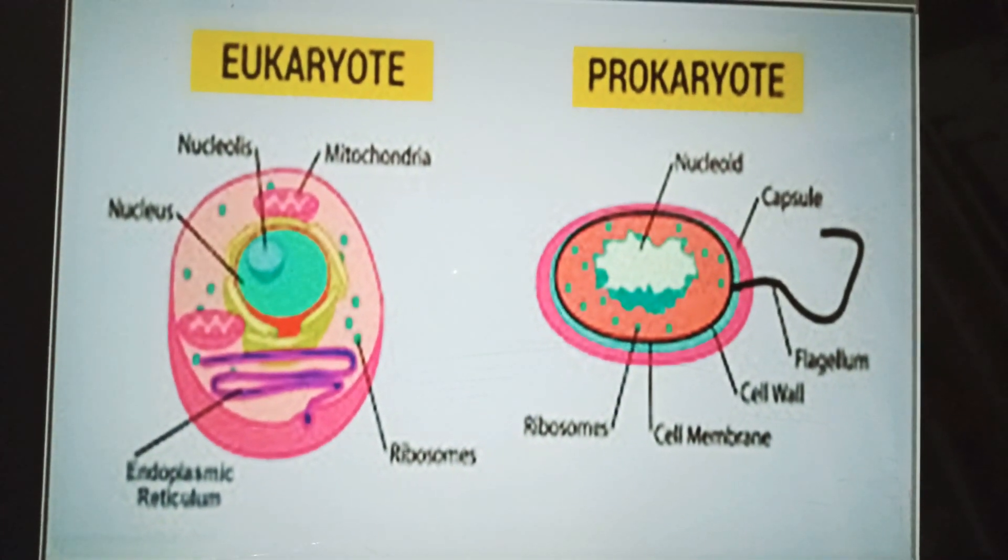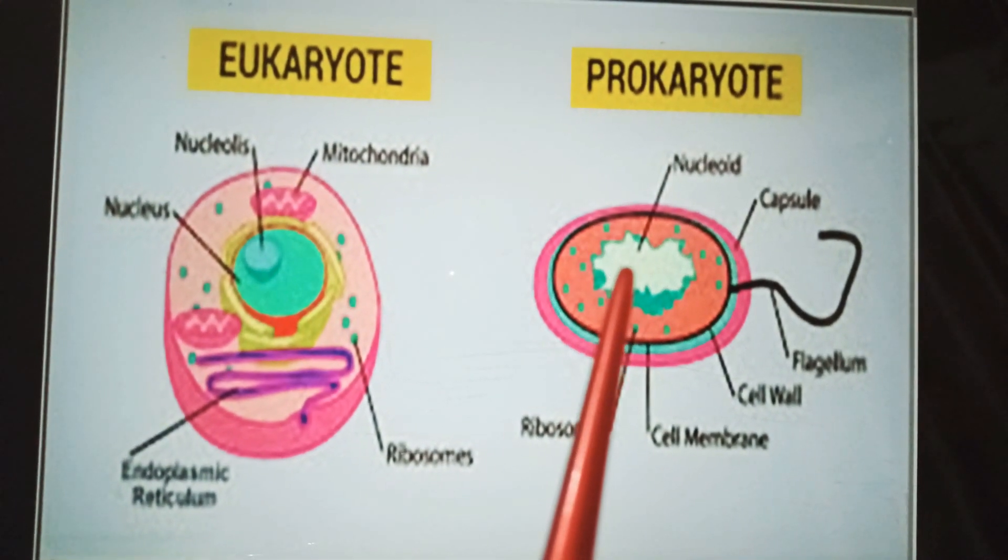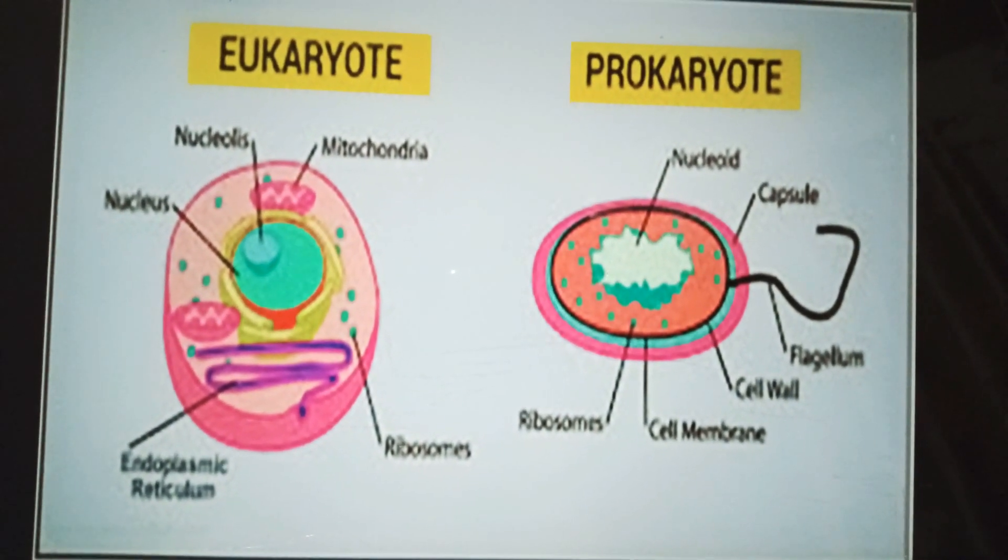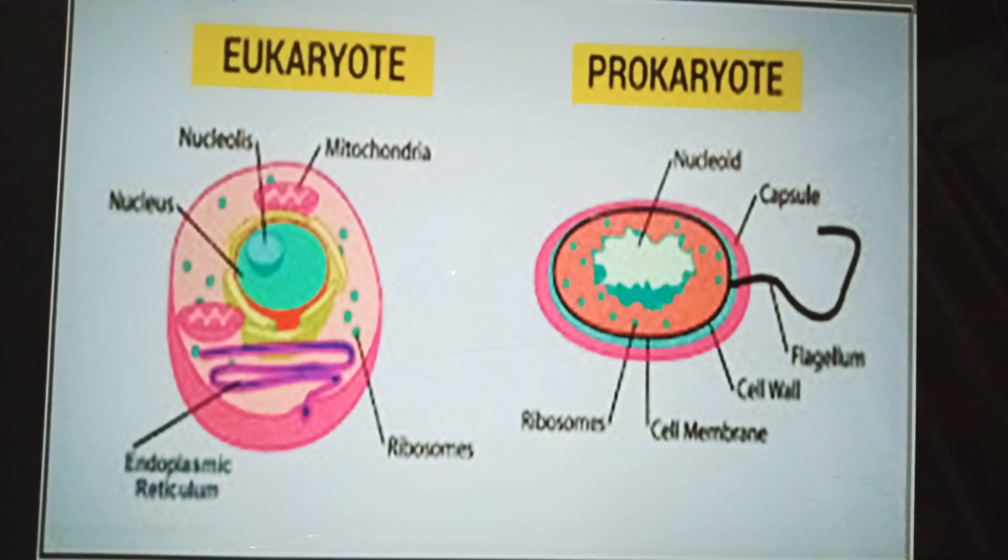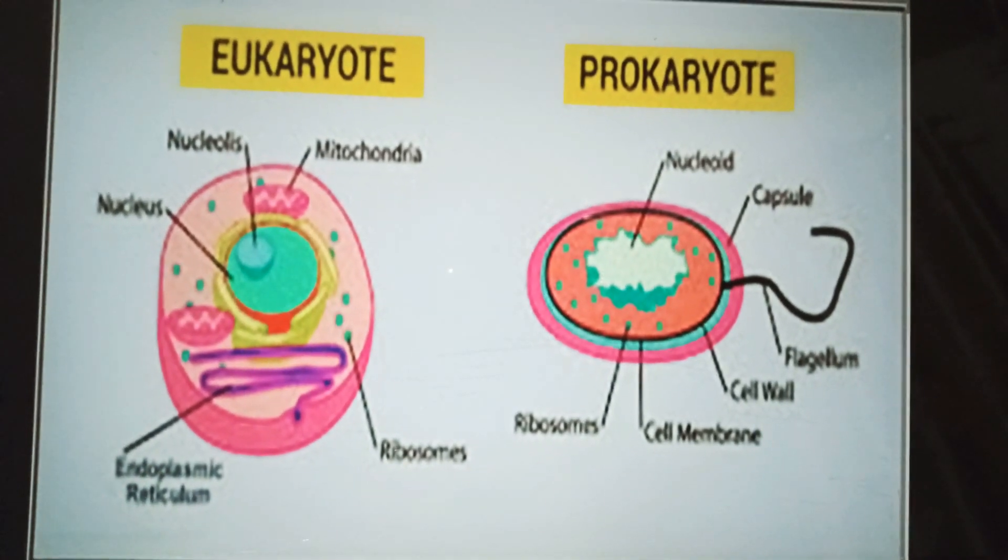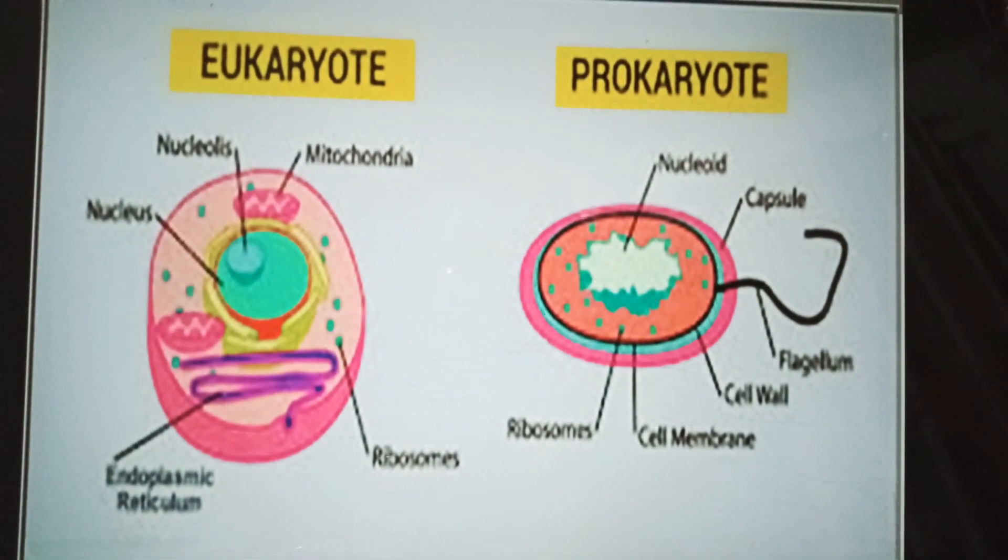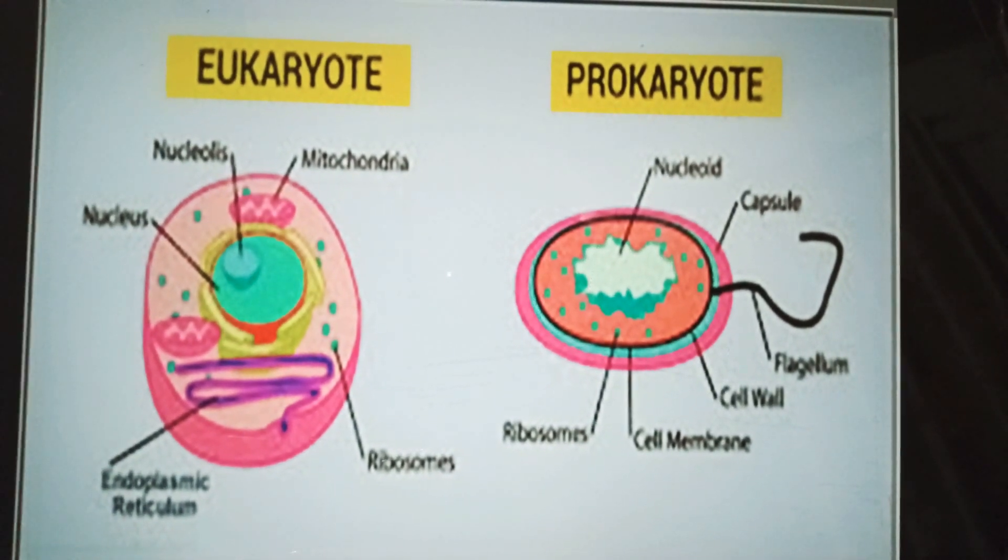Eukaryotic cells have membrane-bounded organelles like mitochondria, Golgi apparatus, endoplasmic reticulum, while such membrane-bounded organelles are not present in prokaryotic cells.